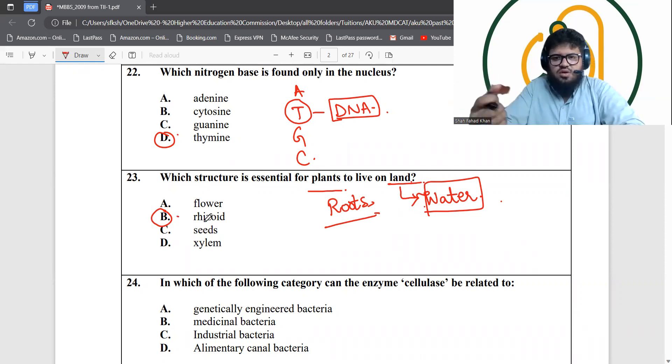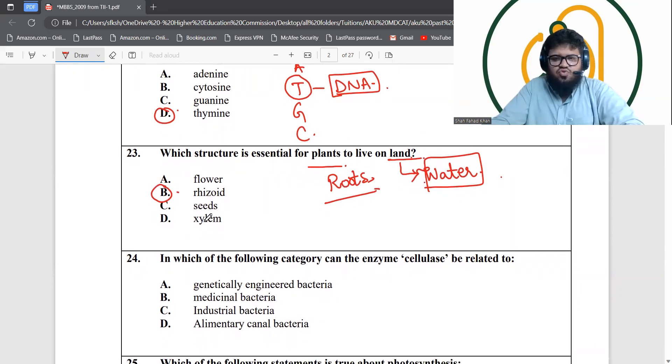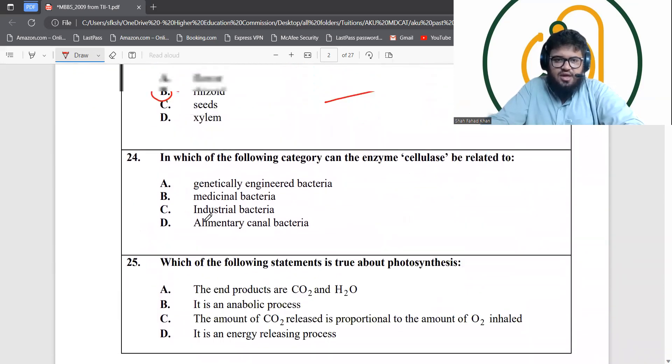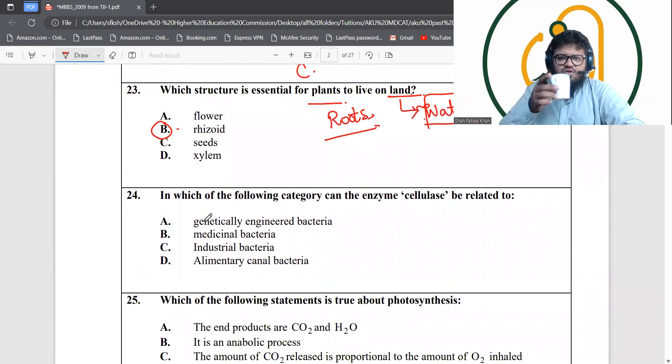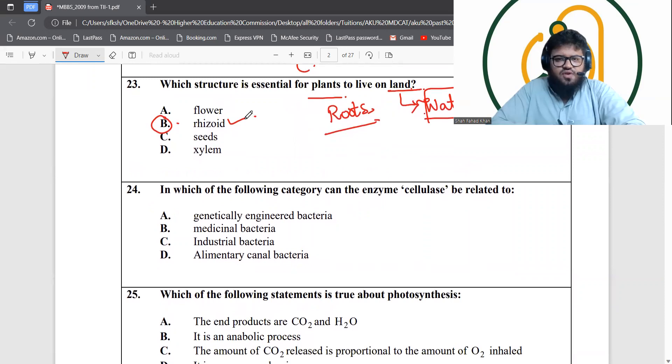In which of the following categories can the enzyme cellulase be related to? Cellulase is actually an enzyme that is usually found in the alimentary canal of herbivores.